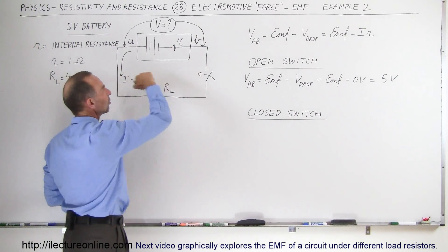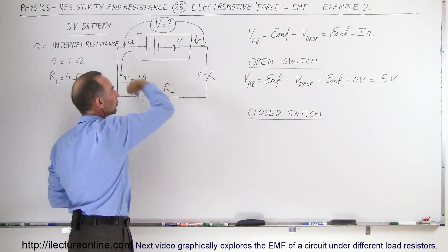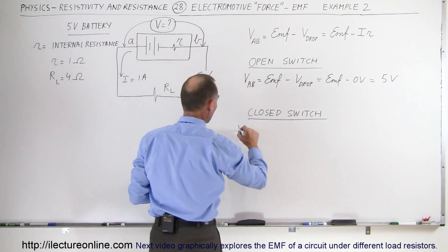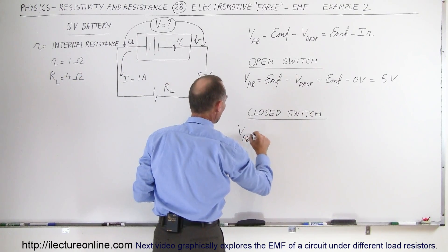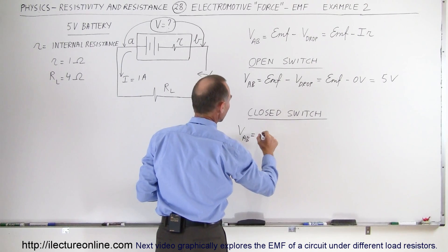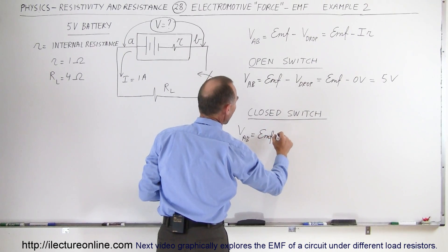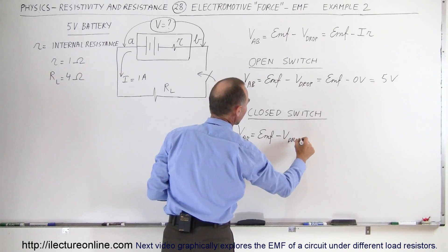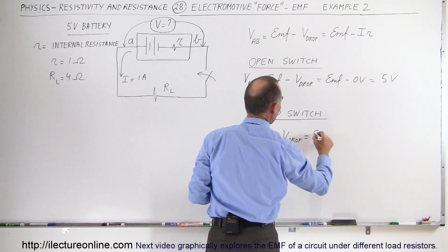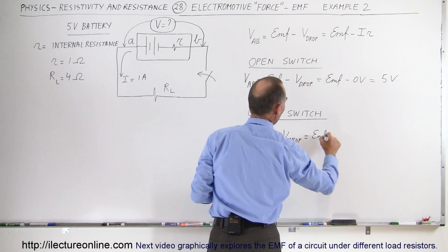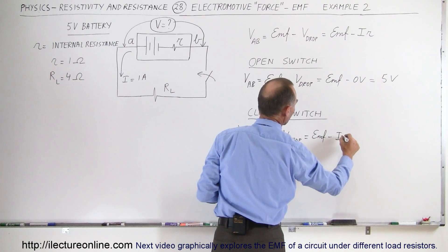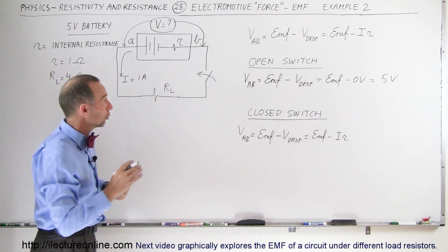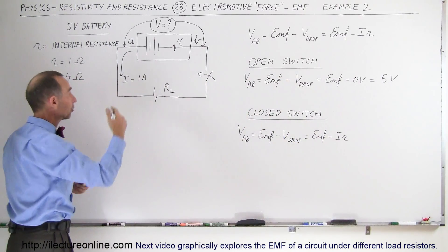Now when we close the switch and current flows in the circuit, the voltage from A to B equals the EMF of the battery minus the voltage drop across the internal resistance, which equals the EMF minus the current through the circuit times the internal resistance. So now we need to find the current in the circuit.